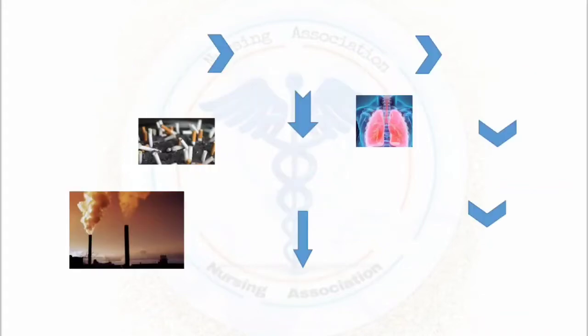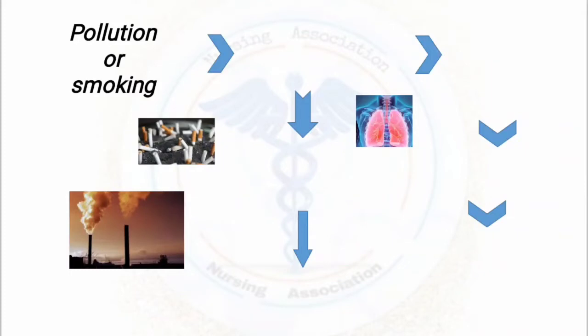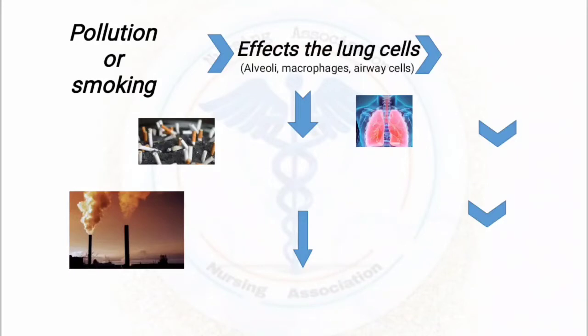We will start with the etiological factors. Pollution or smoking will directly introduce toxic agents, toxic materials, and toxic particles into our airway tract through the nostrils, and these will go and get stuck in the lungs, starting to affect the lung cells — specifically the cells of the alveoli, macrophages, and airway.